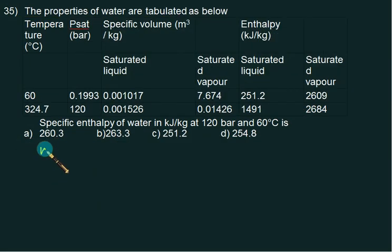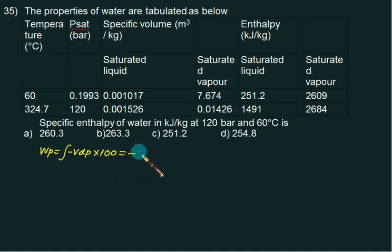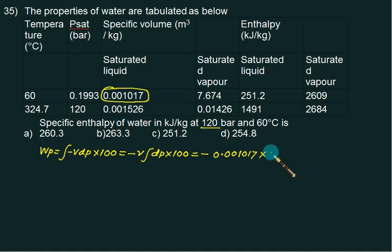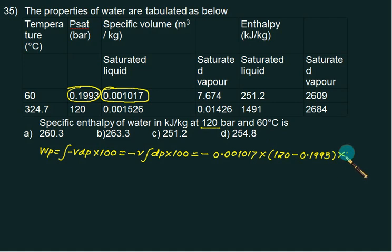A similar problem: calculate the pump work W = −∫V dP × 100 (bar to kJ/kg conversion). The specific volume is 0.001017, P2 = 120 bar, P1 = 0.1993 bar. So W = −0.001017 × (120 − 0.1993) × 100 = −12.18 kJ/kg.